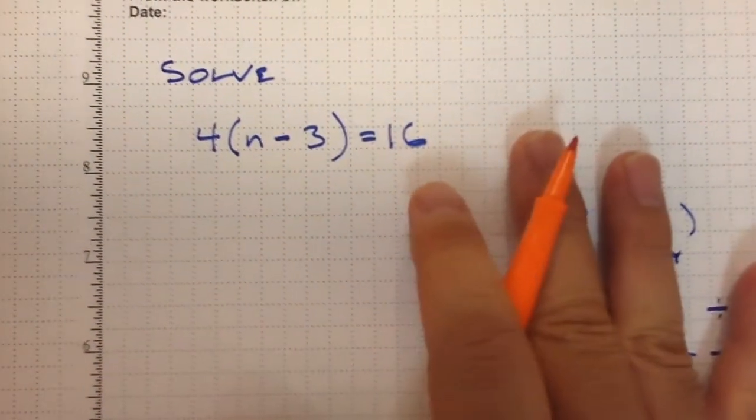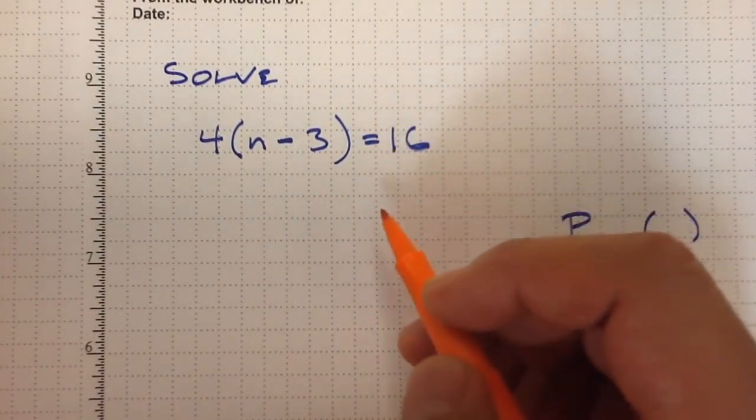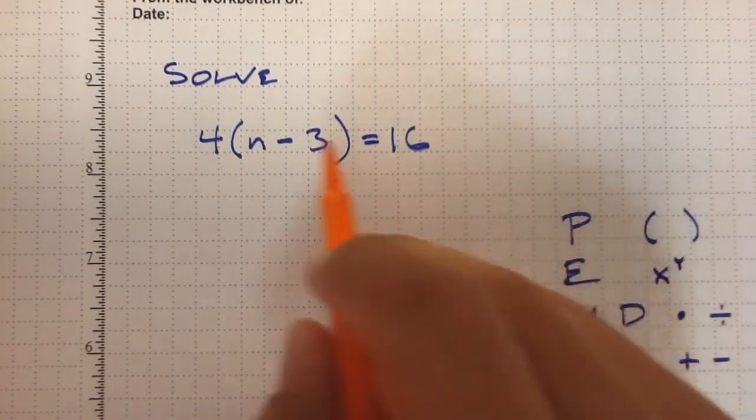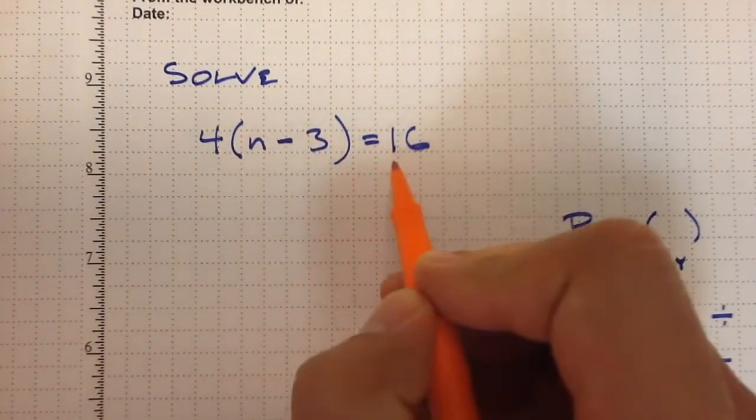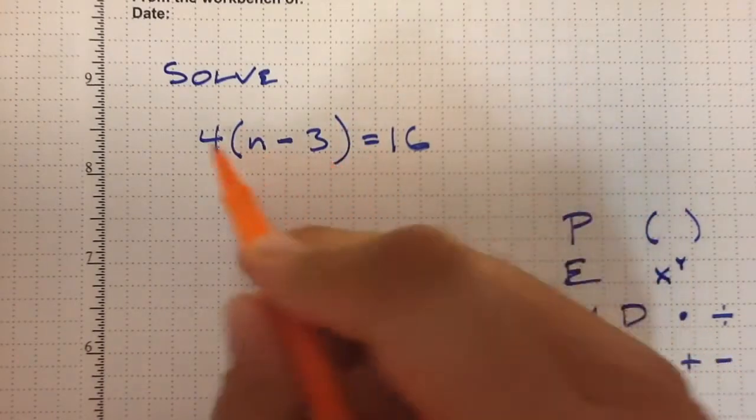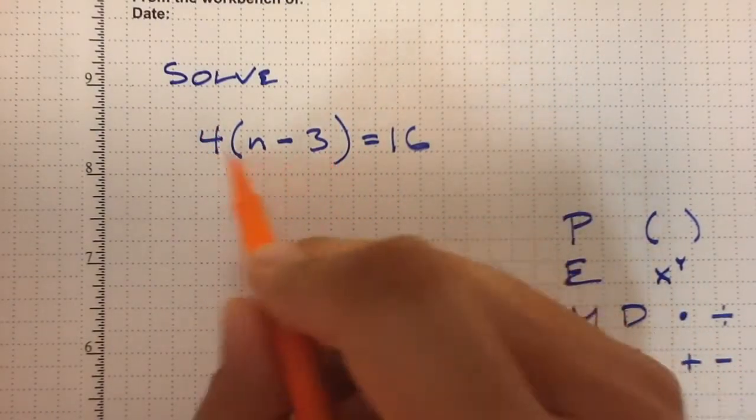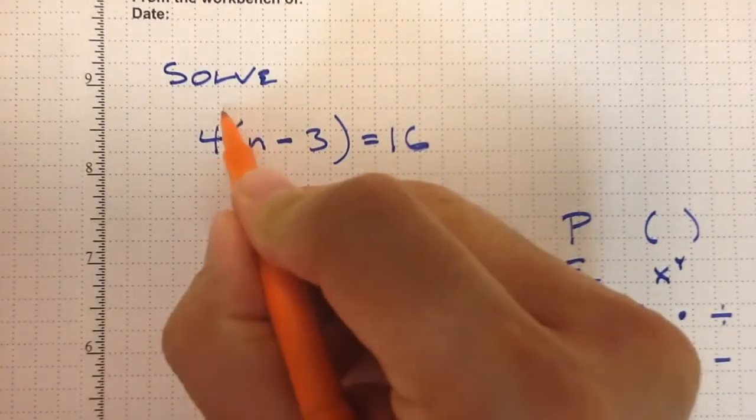Now before we even get to that, let's talk about something from last year. Sometimes what we'd like to do before we start actually doing the work is to simplify the problem. Here I've got parentheses times 4, and this should look familiar from last year - this is distributive property.